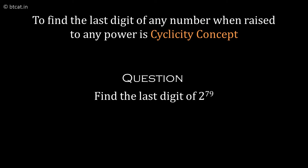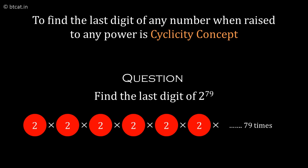2 raised to the power 79 is basically 2 times 2 times 2... 79 times. We want to find the last digit.